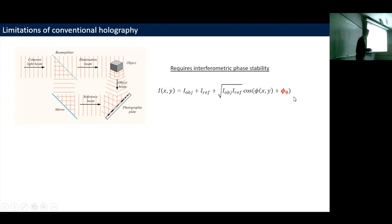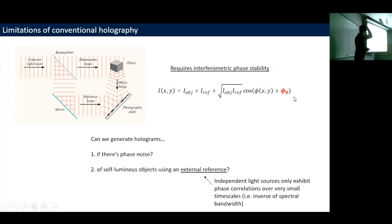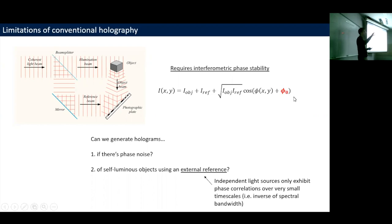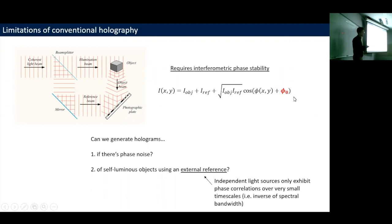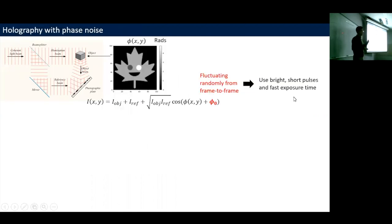The question I want to ask and answer is: can we generate holograms when there's phase noise? Related to this is whether we can generate holograms of objects which themselves emit light — instead of splitting a single source, the object itself emits and we interfere that with an external reference. These questions are related because light from independent sources only has phase correlations over very short timescales, related to the inverse of their spectral bandwidth. One easy approach to holography with phase noise is simply to speed up your exposure time.